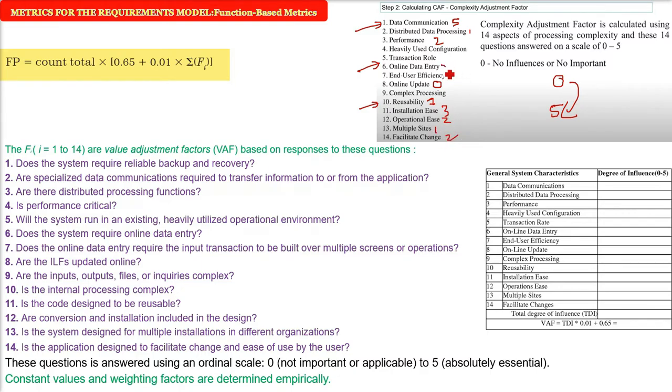So we gave all these 14 values some value between 0 and 5. And then all values you have to add. The number between 0 to 5 you have given, you have to add them. So when you add them, what do you get? This is sigma Fi, whichever number comes. And you just put it here, that will be the functional point.